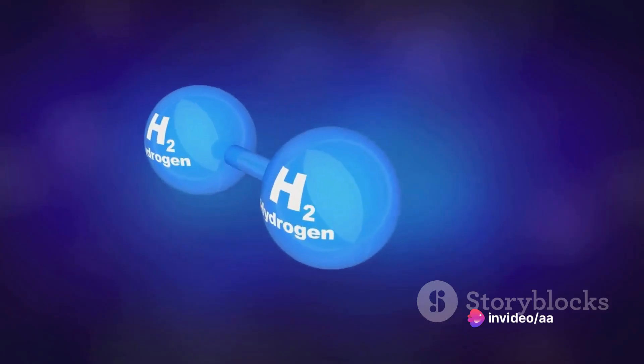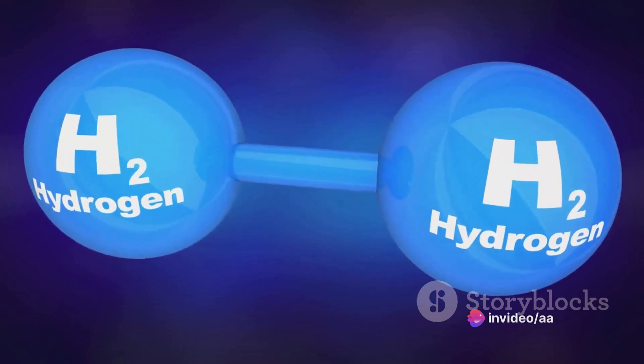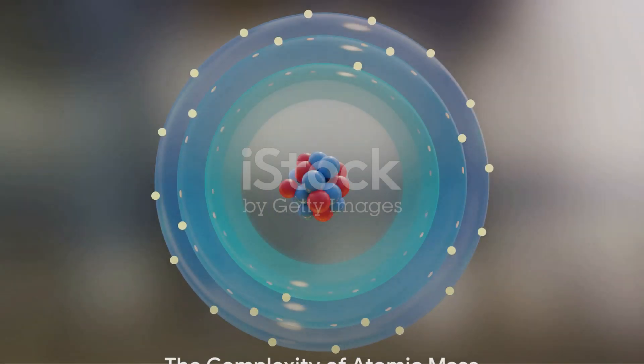For example, hydrogen, with its one proton and no neutrons, has an atomic mass of approximately one atomic mass unit.